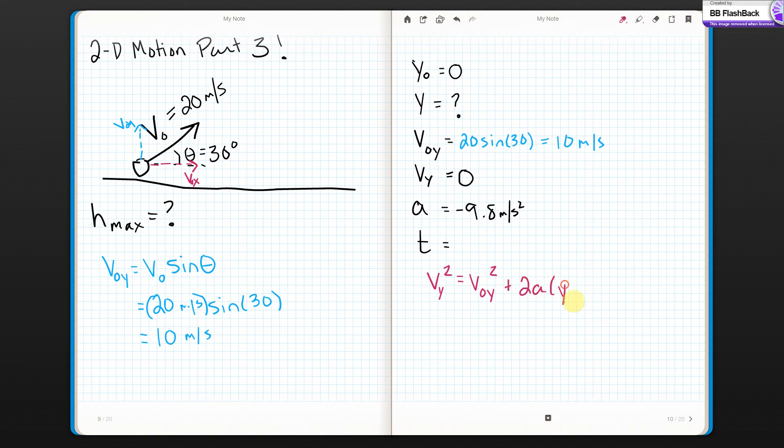V squared equals V naught squared plus 2A change in position. Well, that's 0, so ignore it. What else is 0? This is 0, so it's gone too. So, I get 0 equals V0Y squared plus 2AY. I want Y, so I'm going to move this to the other side, negative V0Y squared, and I'm going to divide by 2A to get that alone. That's going to give me Y.